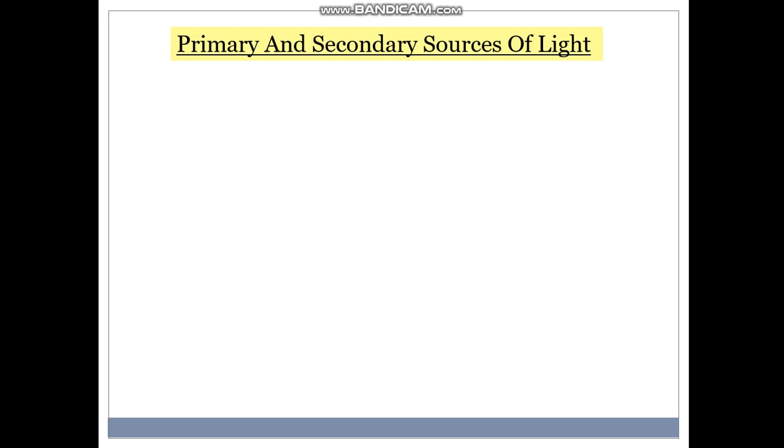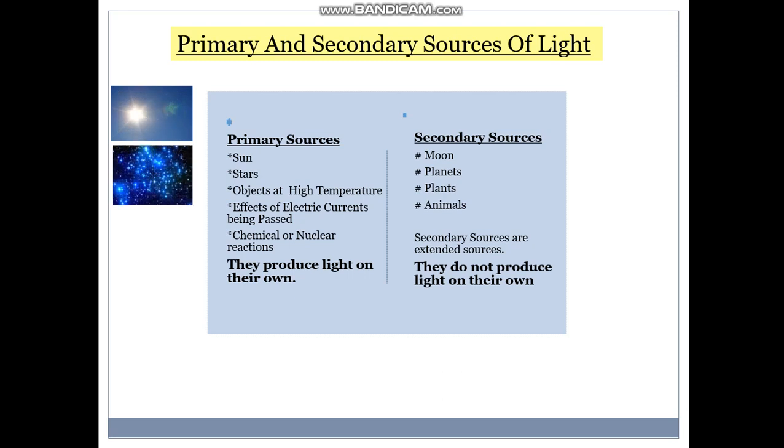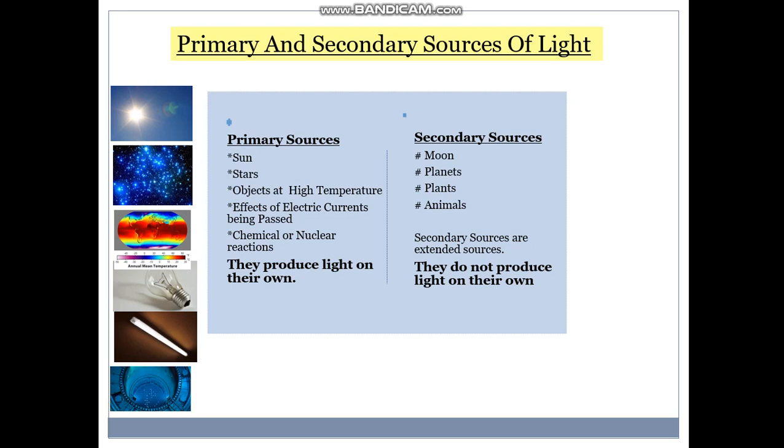Let's see what are primary and secondary sources of light. Primary sources are sun, stars, objects at high temperature, effects of electric current being passed, chemical or nuclear reactions. They produce light on their own.